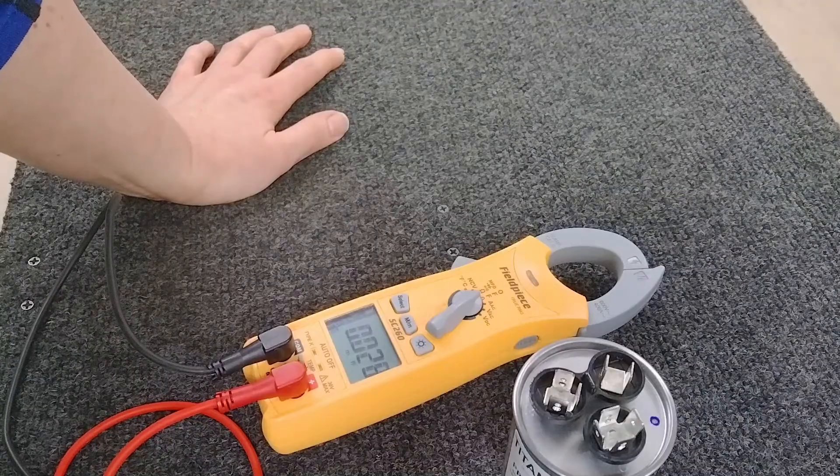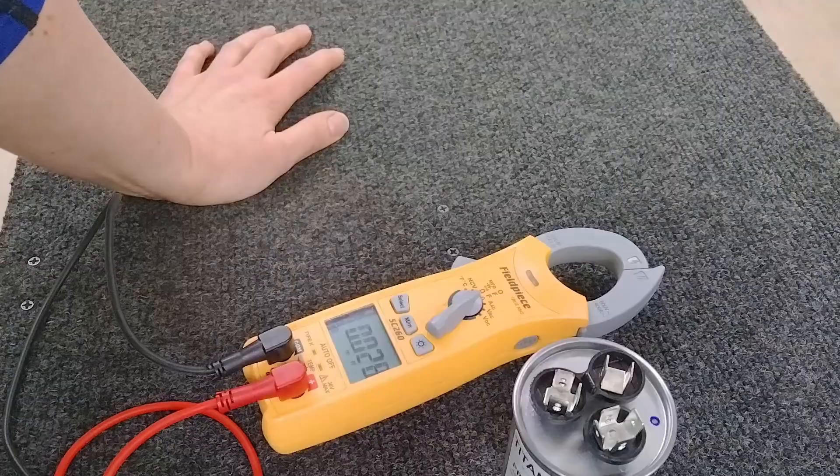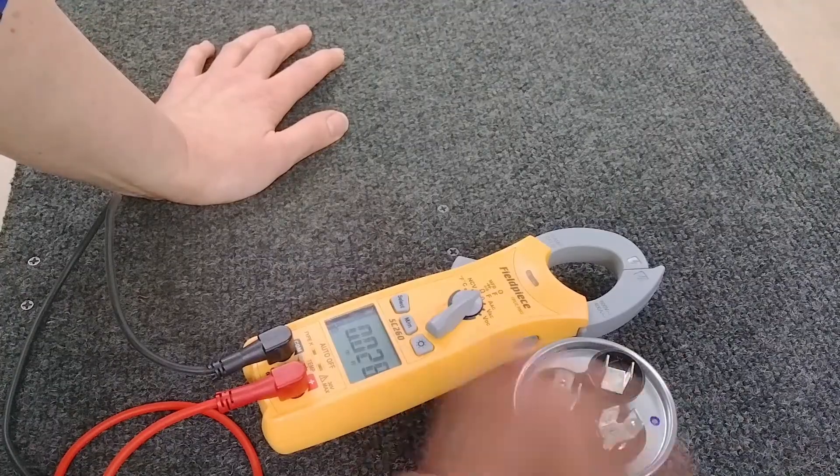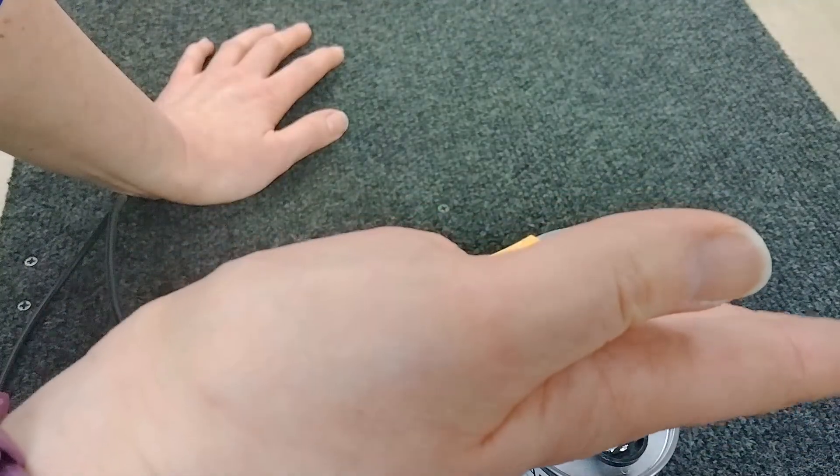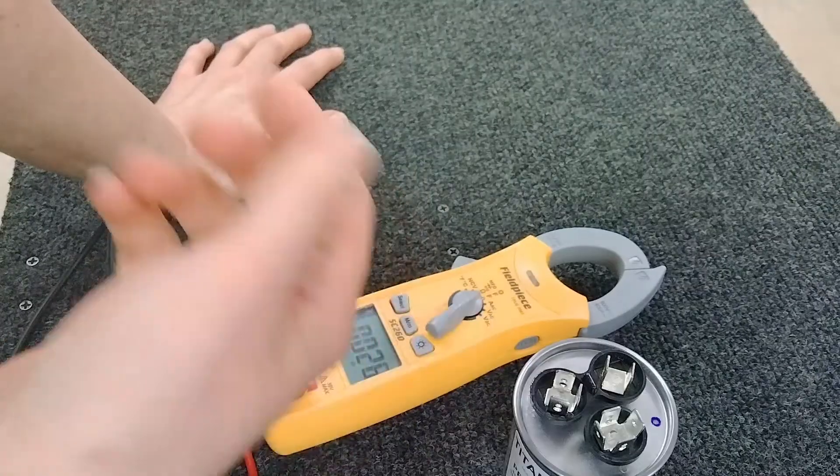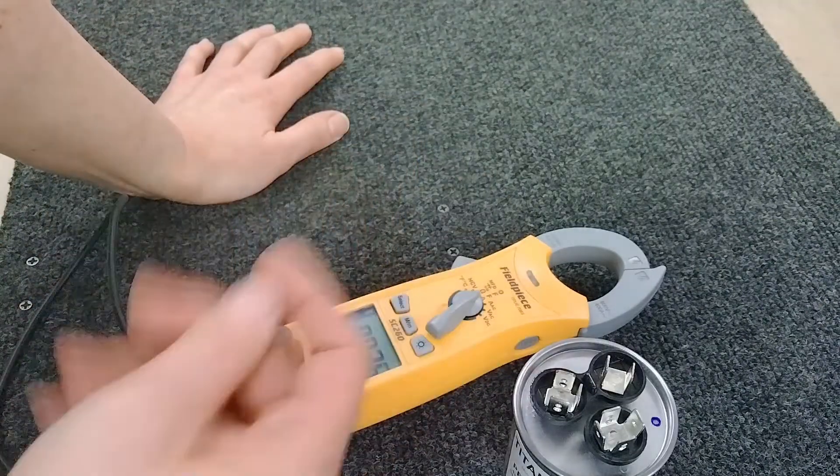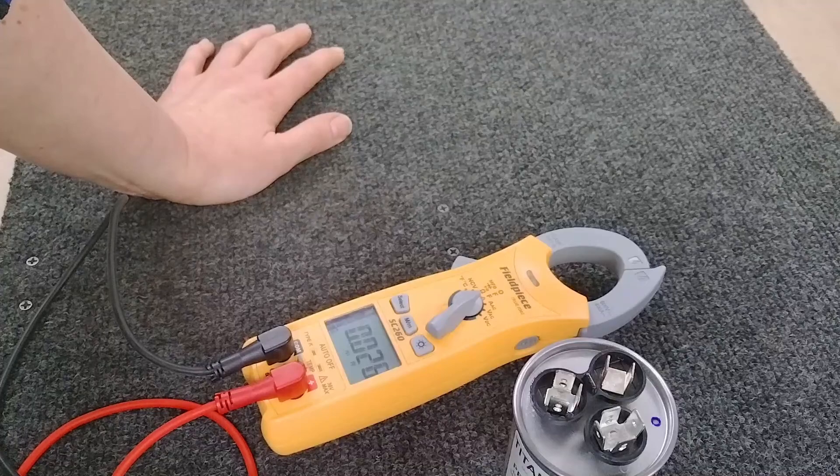With an analog meter, the needle will go up and then go down, which shows the capacitor is holding some sort of capacitance or charge. The problem with that is it's not going to tell you if your capacitor is low.